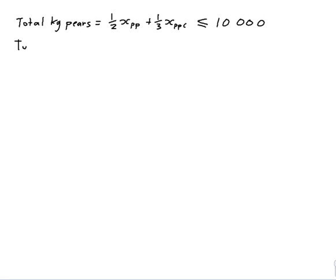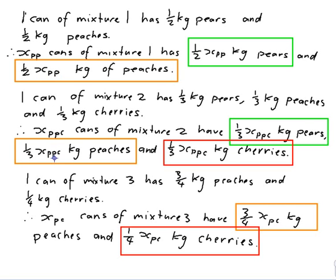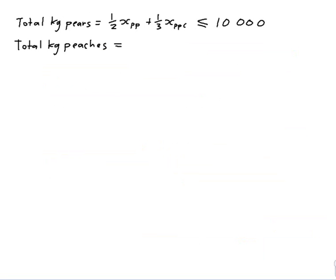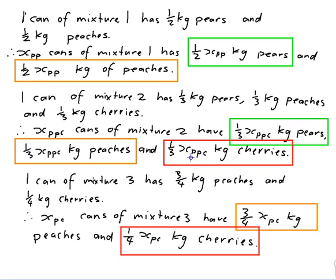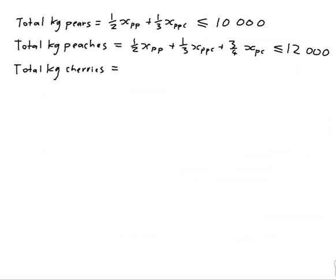For the cherries constraint, the total kg of cherries comes from mixture 2 and mixture 3: that's (1/3)x_PPC from mixture 2 and (1/4)x_PC from mixture 3. So the constraint is: (1/3)x_PPC + (1/4)x_PC ≤ 8,000. Now all I need is a function to maximise.